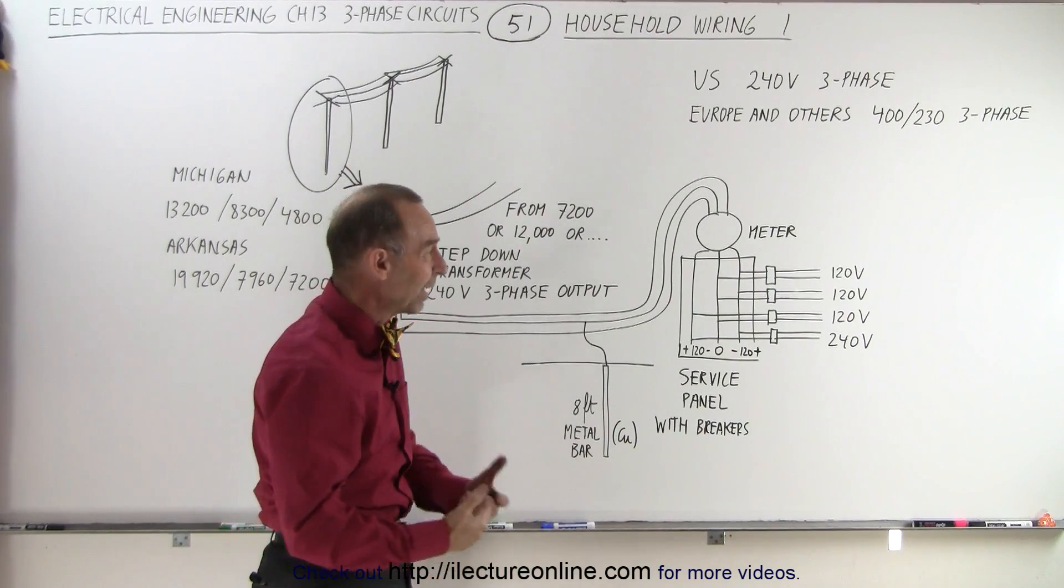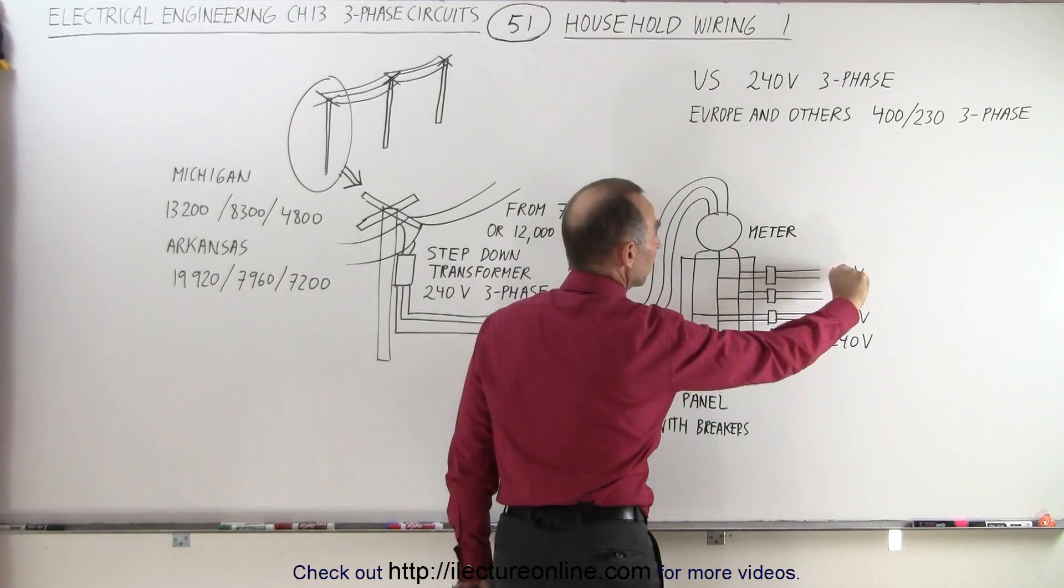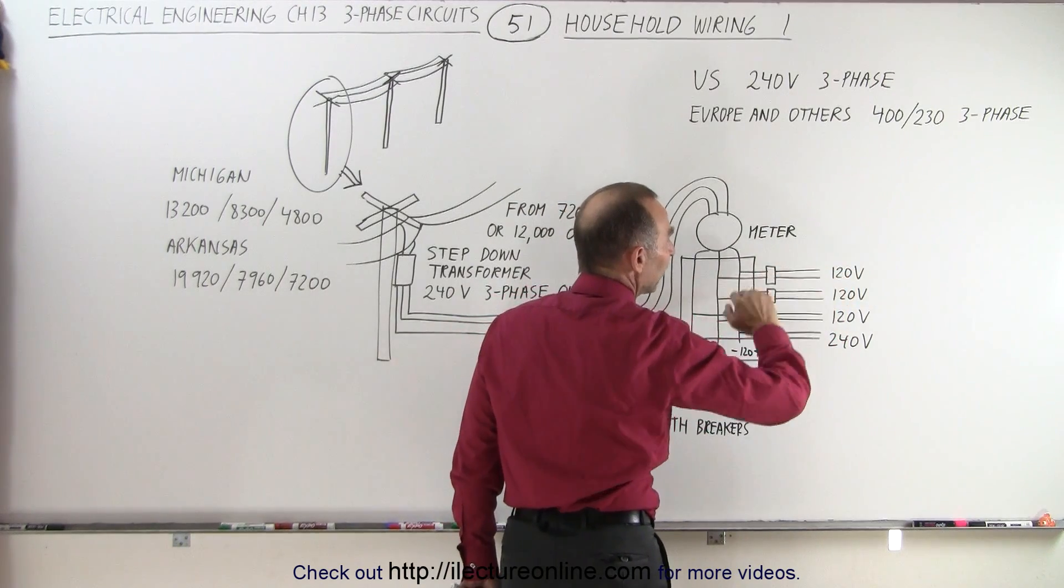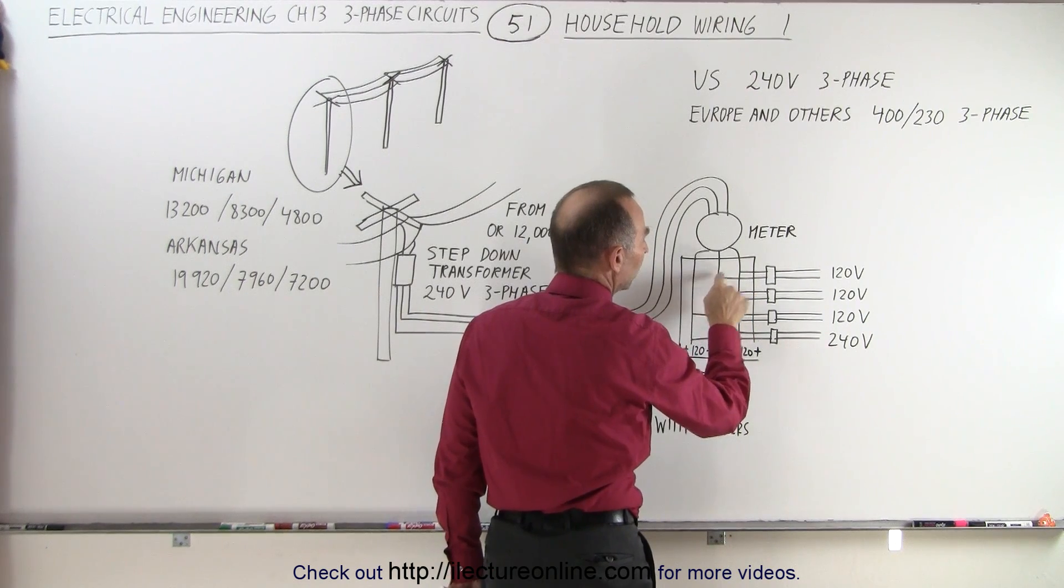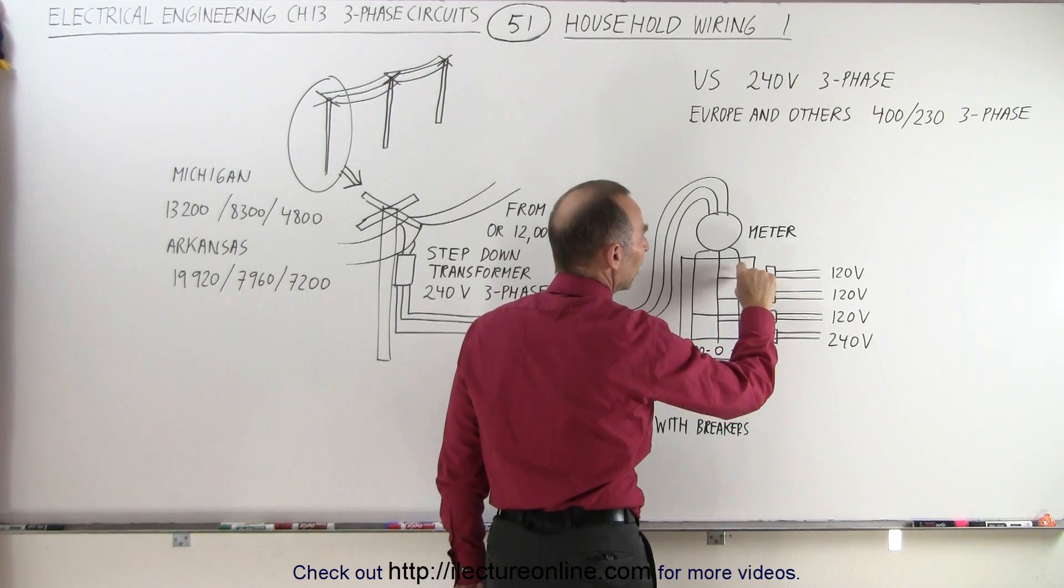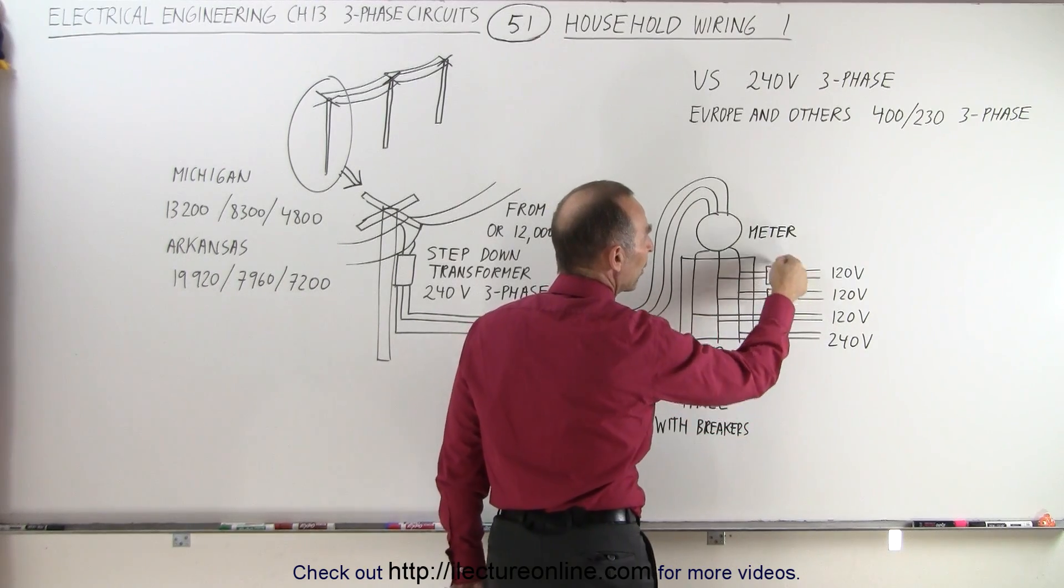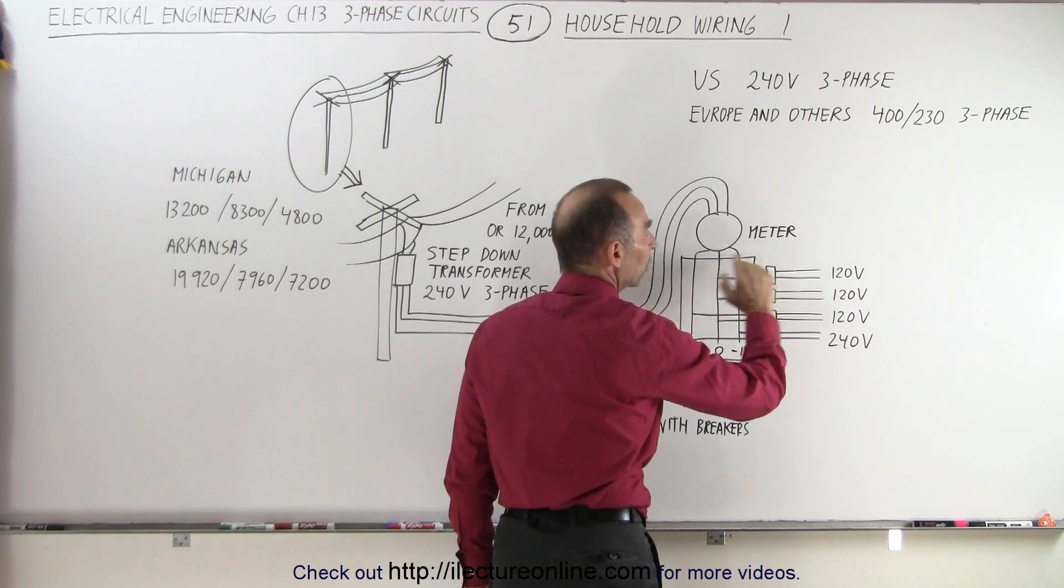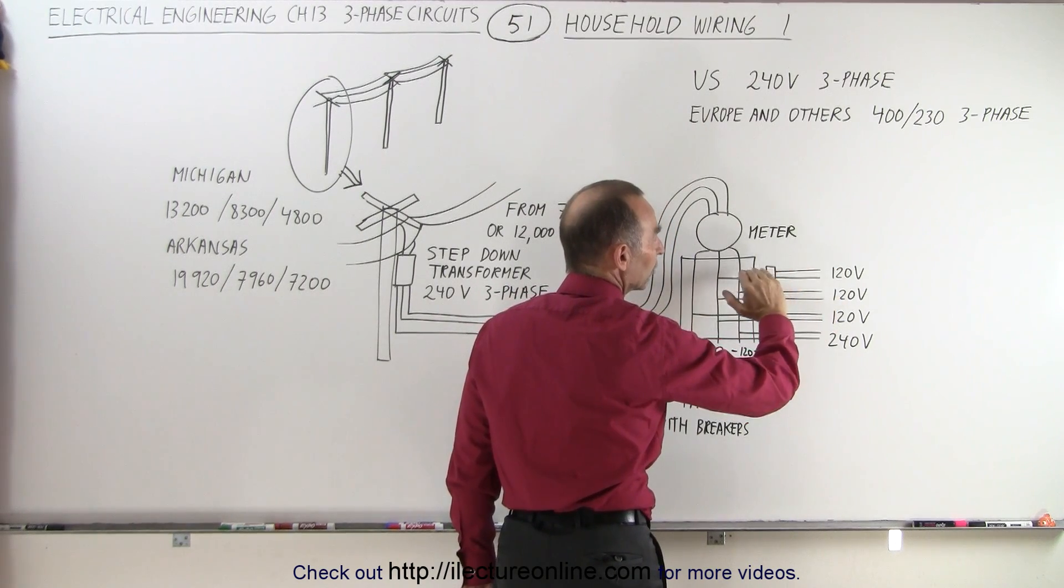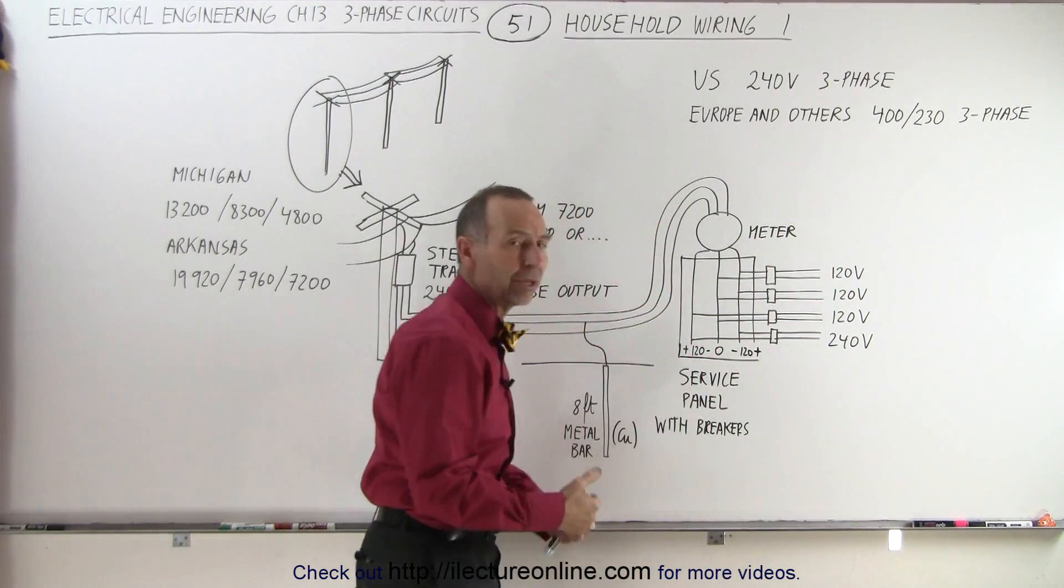Now most lights and appliances in the house only require 120 volts, which means we're going to run a bunch of lines into the house in various places. Notice that we pull a wire from the neutral and a wire from one of the hot lines. The potential difference there will be 120 volts. Typically they go through what we call a breaker, so that if too much current is drawn, the breaker will stop the transmission of electricity.